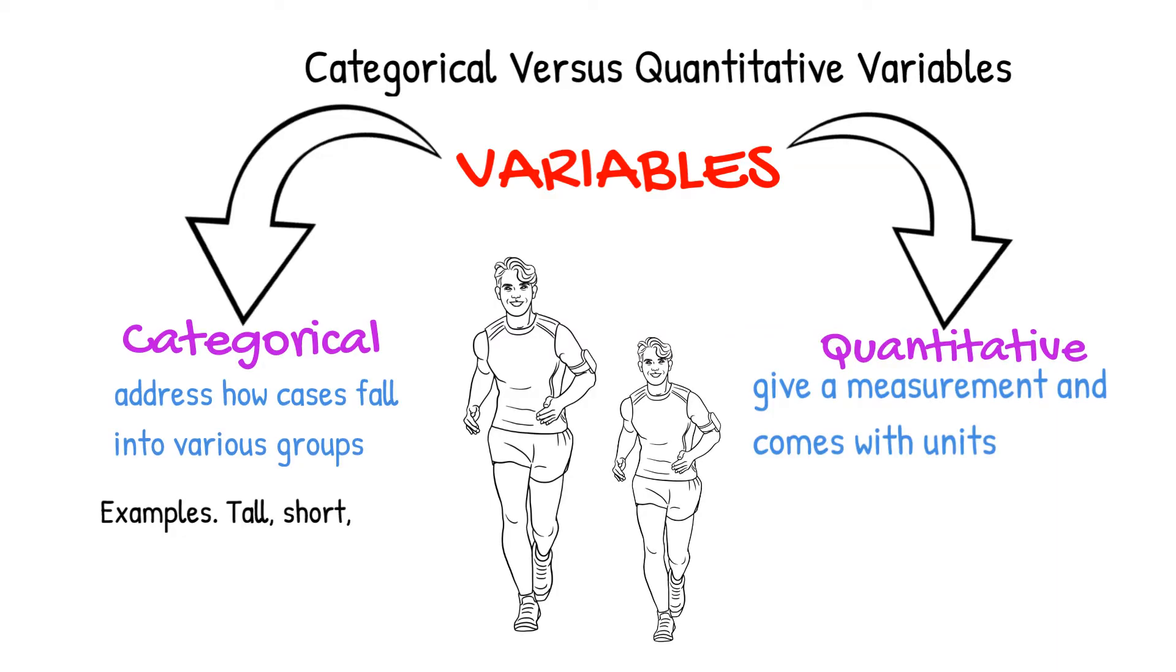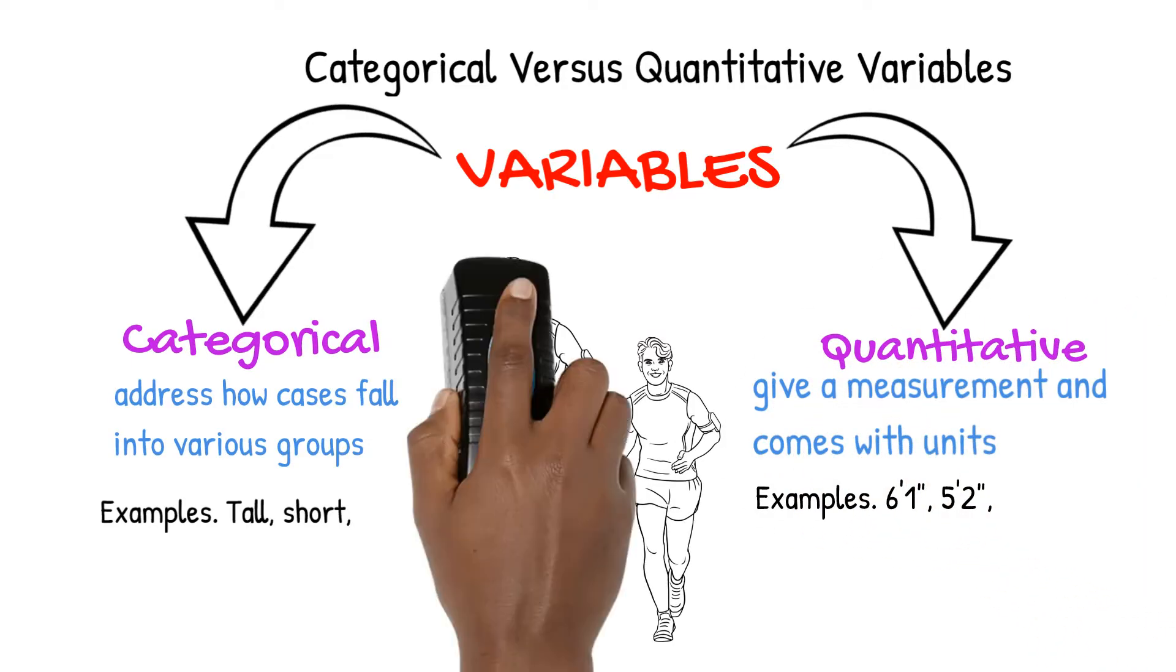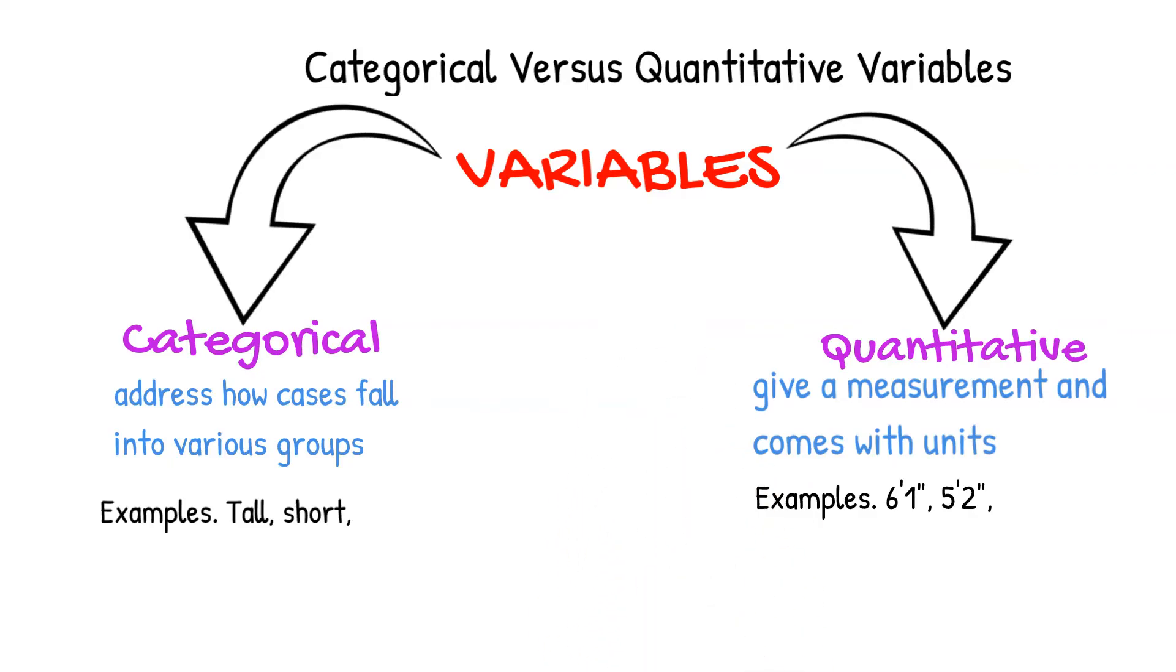We can also give their heights. For example, 6'1 and 5'2. Since these are measurements with units, the data here is quantitative.